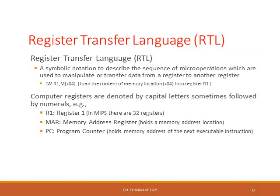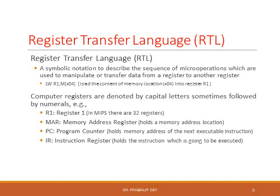PC is the program counter register. It holds the memory address of the next executable instruction. IR is the instruction register — it holds the instruction which is going to be executed in the ALU. SR is the status register — it holds the status information of an operation. For example, a binary addition may or may not generate a carry, and the status register will contain the information about whether that addition is generating any carry or not.